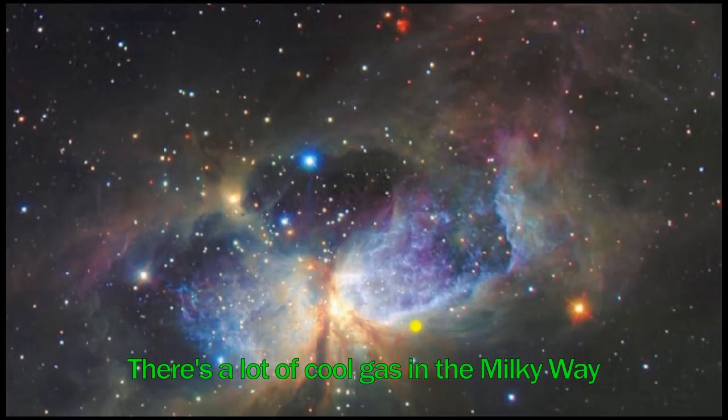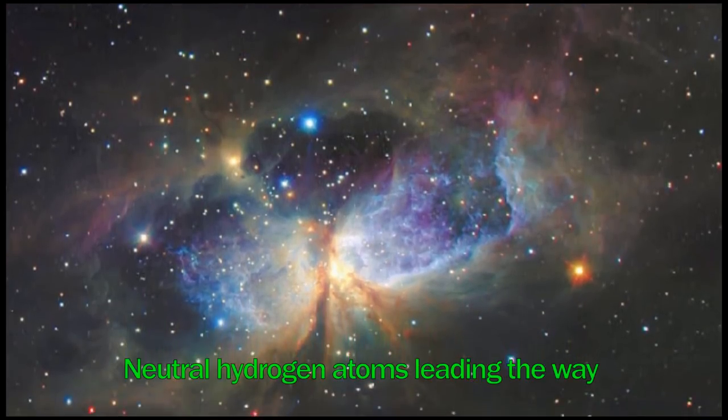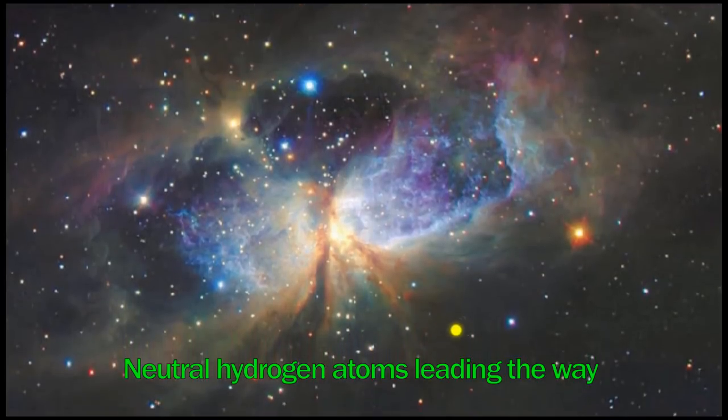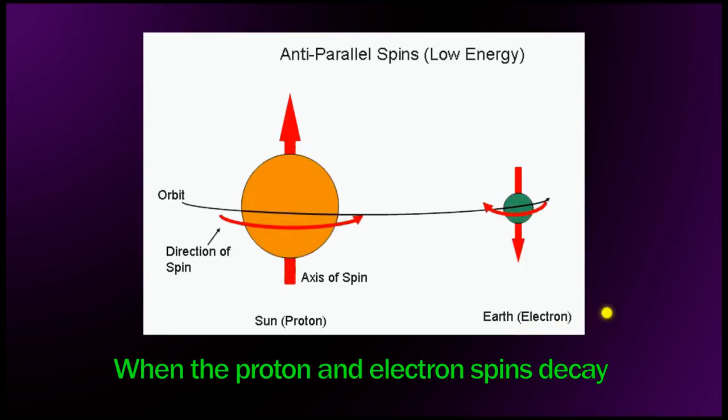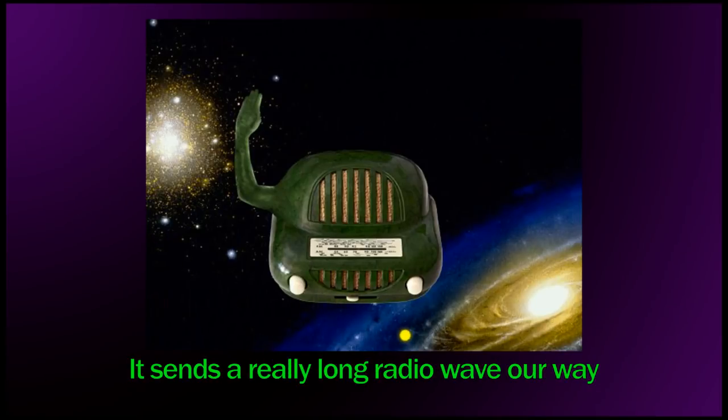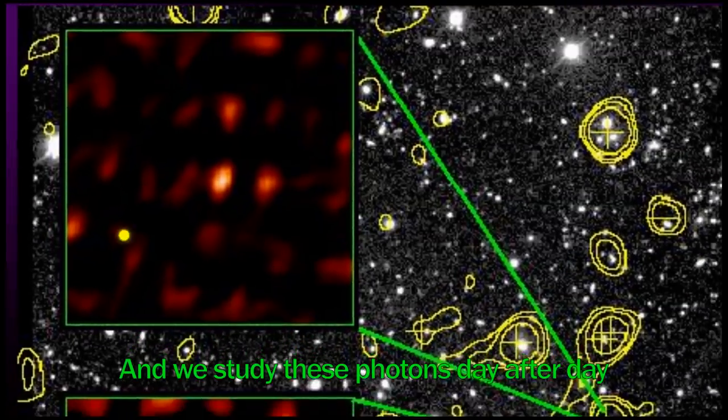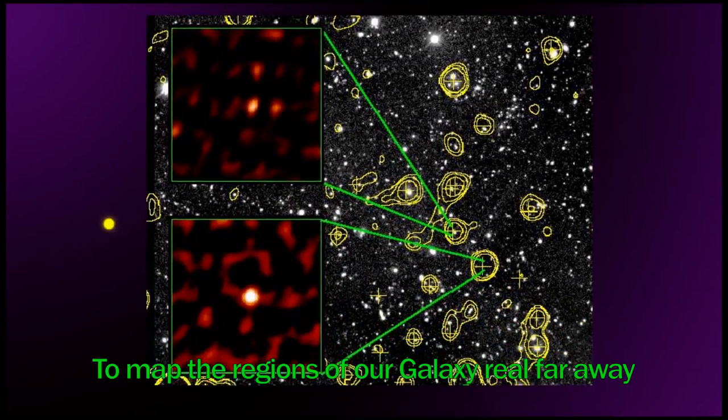There's a lot of cool gas in the Milky Way. Neutral hydrogen atoms leading the way. When the proton and electrons can decay, it sends a really long radio wave away. And we study these photons day after day to map the regions of the galaxy real far away.